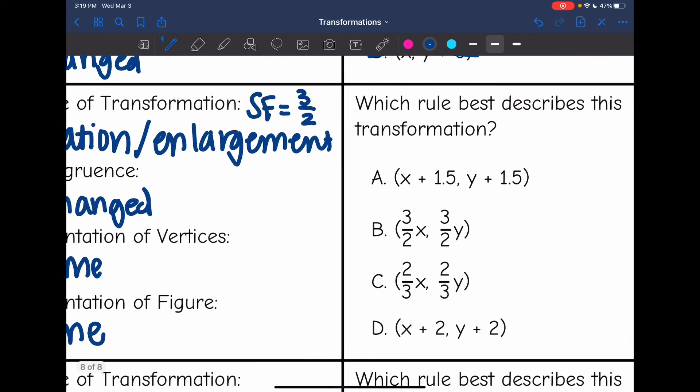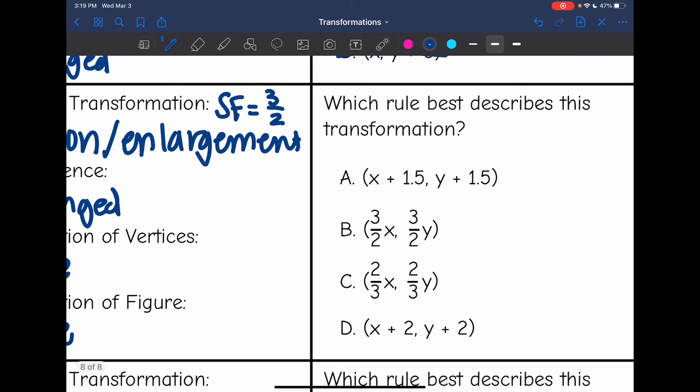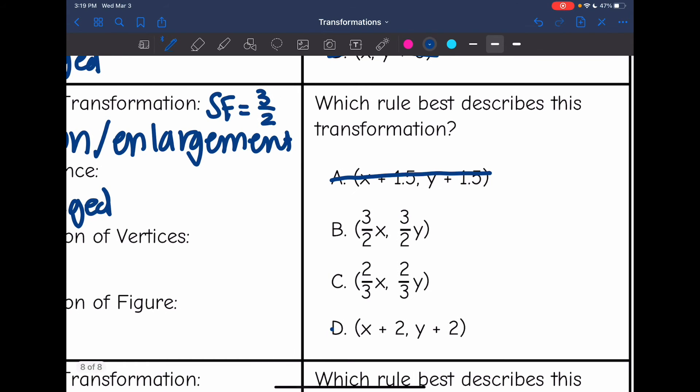Okay, now let's look at the rule. So I'm going to go ahead and cross out A and D because those are translations. In a dilation, we multiply by the scale factor. And we already talked about how the scale factor is 3 over 2. So the answer is B on this one.